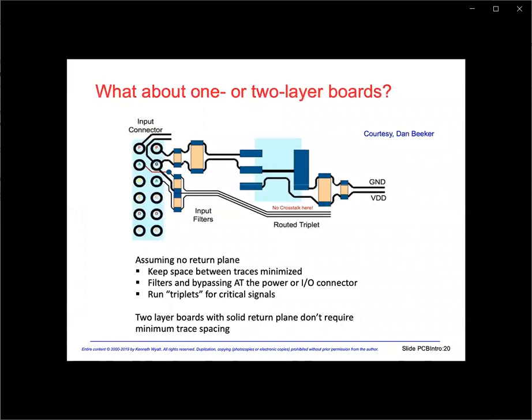For one- or two-layer board designs, Dan Beaker of NXP Semiconductors suggests using what's called triplets. The triplet is simply a signal return trace located between two signal traces with minimum spacing. The electromagnetic field is trapped between the signal and return traces and is routed where needed. For power nets, keep a minimum spacing between power and power return traces. For two-layer boards, the minimum spacing of power nets and triplets may be relaxed, assuming a solid ground return plane.